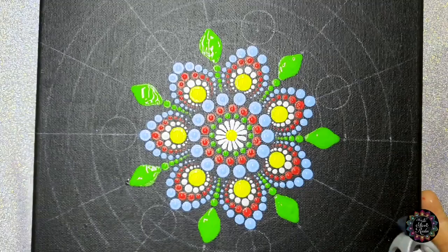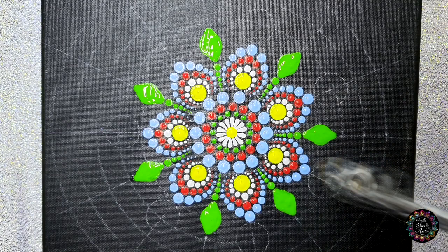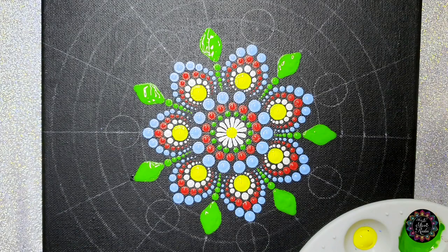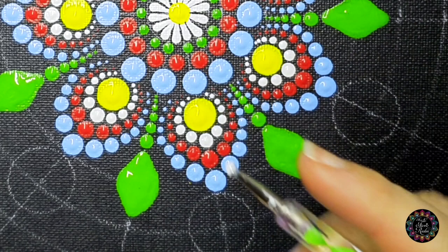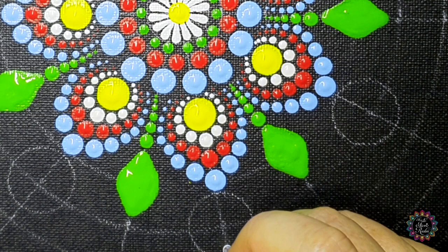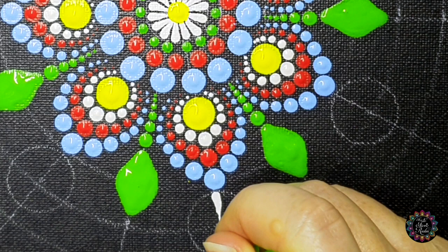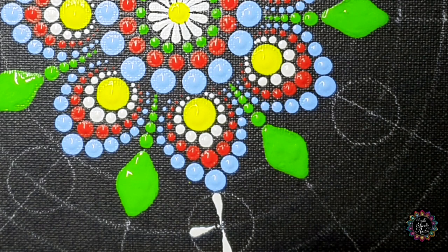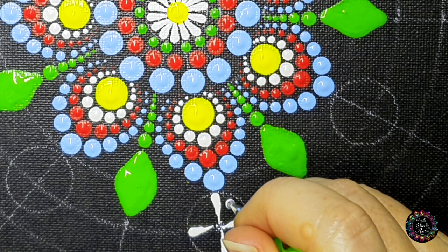Now we're going to do exactly the same thing, also going to take white and the big ball side of our green tool. Now because we don't have those other guidelines here from the outside, you're going to go from the top, drag it in. Okay, so we're going to go top and bottom, left and right, and then we're going to do two in between each one.